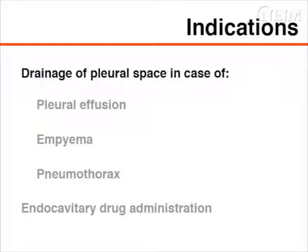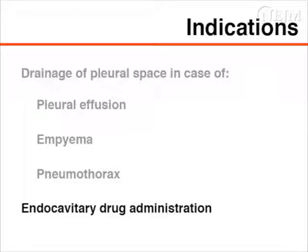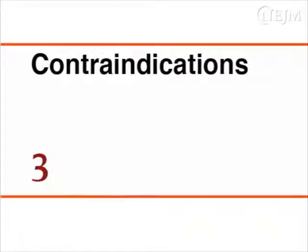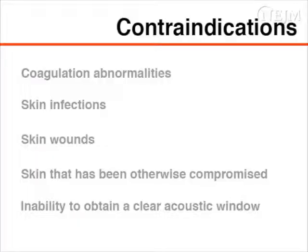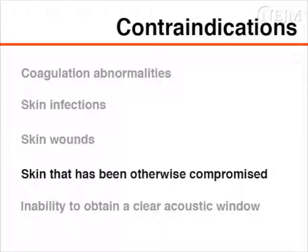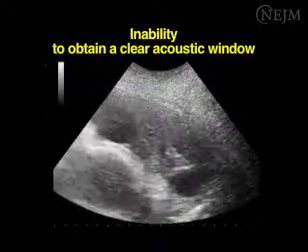The two most common indications for placement of a pleural catheter are drainage of the pleural space in a patient with pleural effusion, empyema, or pneumothorax, and endocavitary administration of a drug. It is mandatory to check for major contraindications, which include coagulation abnormalities, skin infections, skin wounds, or skin otherwise compromised, or the inability to obtain a clear acoustic window with a pre-procedural ultrasound.